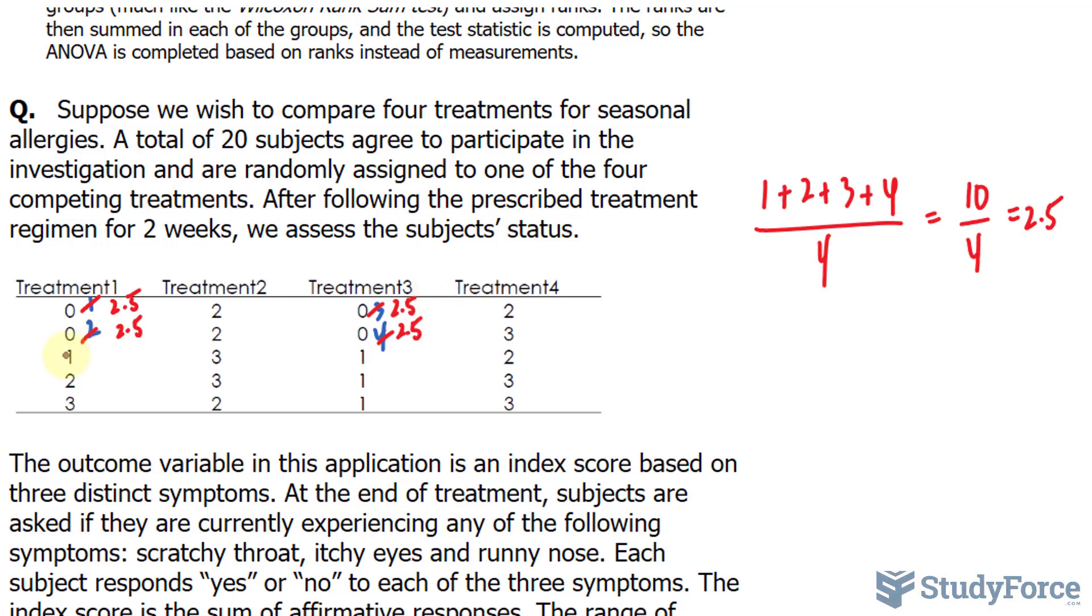The next lowest score is 1. That one, this one, and these two. We can't say that this is 5, 6, 7, and 8. Instead, we will add those, 5 plus 6 plus 7 plus 8, and divide by 4.